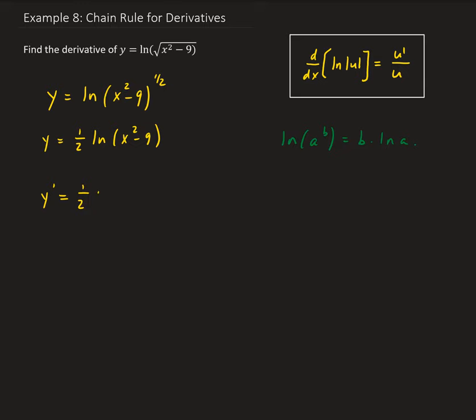So we're going to get 1 over the argument. We have y prime equals one half times 1 over the argument of natural log, which is this. This is the argument for natural log.